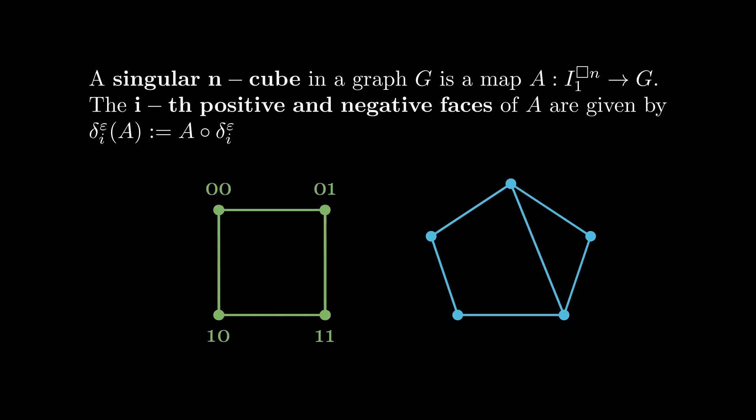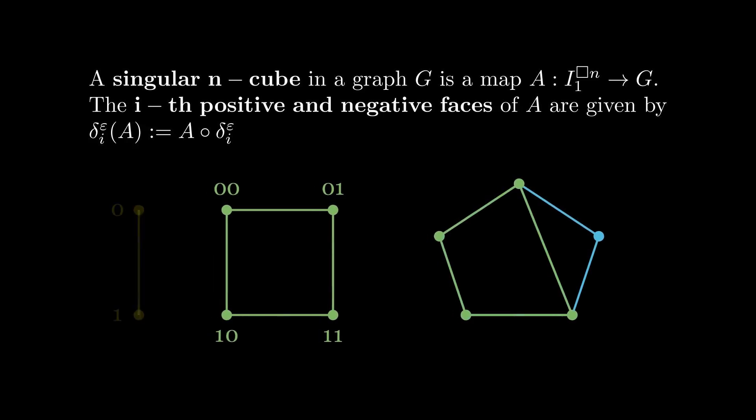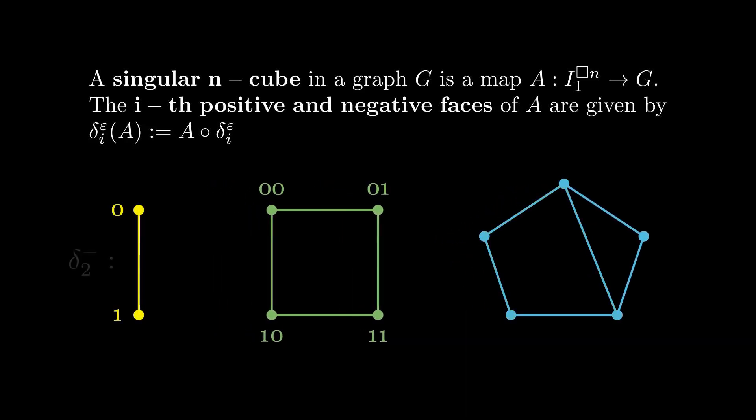So for example, suppose we have a 2-cube in our graph g, given by the map here from the 2-cube. The delta 2-minus face is going to be a graph map from the 1-cube into our graph g, and it's going to be given by just pre-composing with the map delta 2-minus from the 1-cube into the 2-cube.